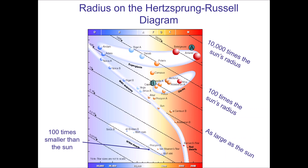On the HR diagram: hotter is further to the left, cooler is further to the right. In terms of brightness, further up is brighter and further down is fainter. In terms of size, the upper right-hand corner is the largest object. The bottom left corner would be smaller, except white dwarfs are always uniformly the size of the Earth. Remember these rules — you will definitely need them for the upcoming exam.